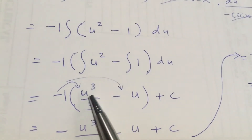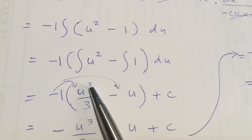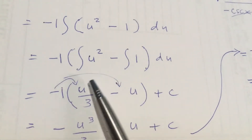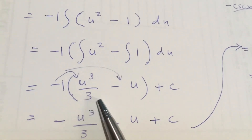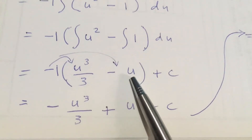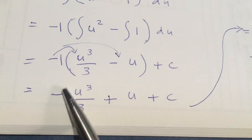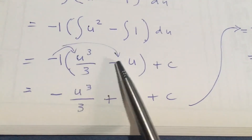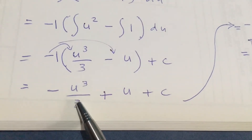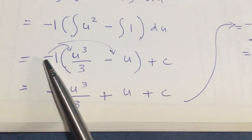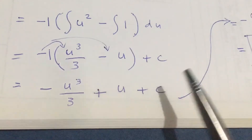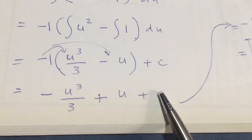Distribute the integration sign and integrate term by term. The integral of u² is u³ over 3 (since 2 plus 1 is 3, bring the 3 to the denominator), and the integral of 1 du is just u. Distributing the negative one gives: negative u³ over 3 plus u plus C.